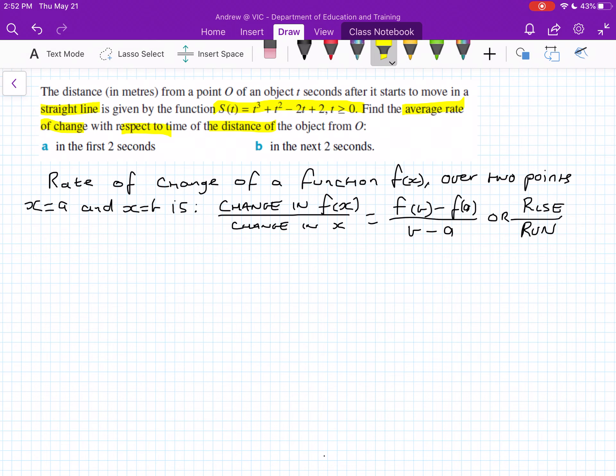So I've just written down how to actually work our average rate of time when given a function. The rate of change of a function f(x) over two points when x equals a and x equals b is the change of f(x) over the change of x. Remember, average rate of change is just like finding a gradient. So if you graphed it up, got those two points and drew a straight line, that's what the gradient will be, that's what we are finding.